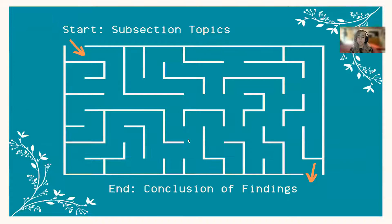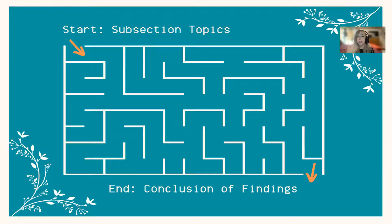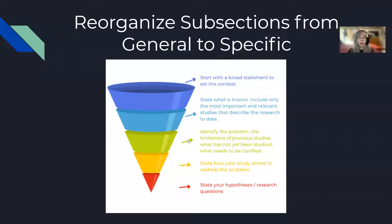When determining the order of your subsection topics, we want that general-to-specific format. We want to introduce our reader to the topic as a whole, give them definitions, and then do the same with the variables — starting generally and working more specifically. For example, explaining what sibling relationships look like, then the factors that influence them like gender and birth position, and working down to your major conclusions from the research as a whole.